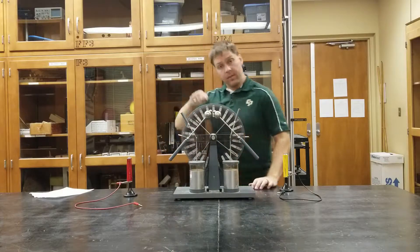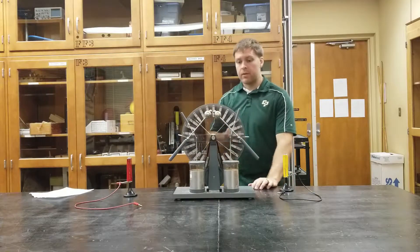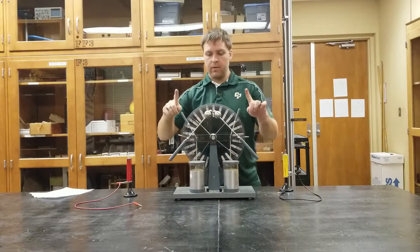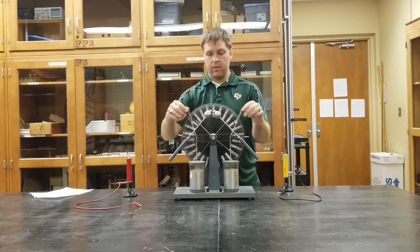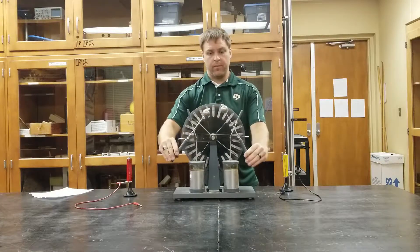A Wimshurst machine can be used to show multiple different demonstrations. Make sure that you rotate in a clockwise direction when behind it. There are these two levers here and these two discharge levers.